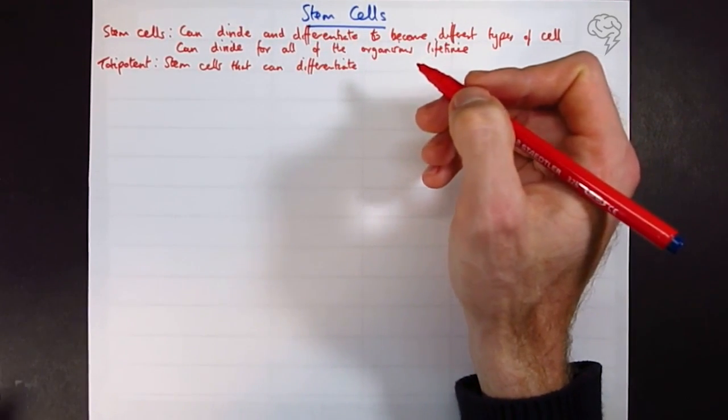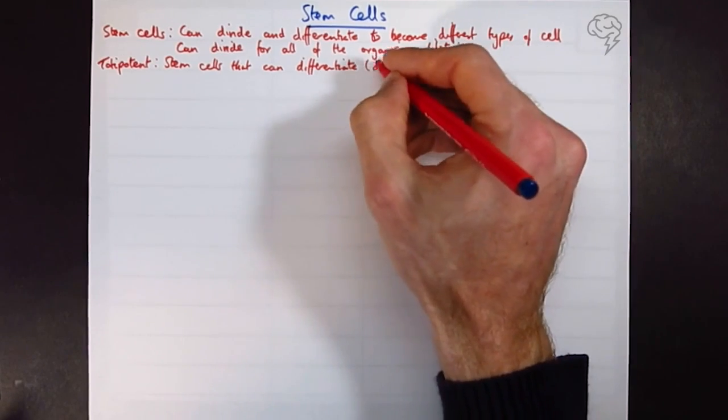Differentiate means that they can specialize or divide to become specialized cells.